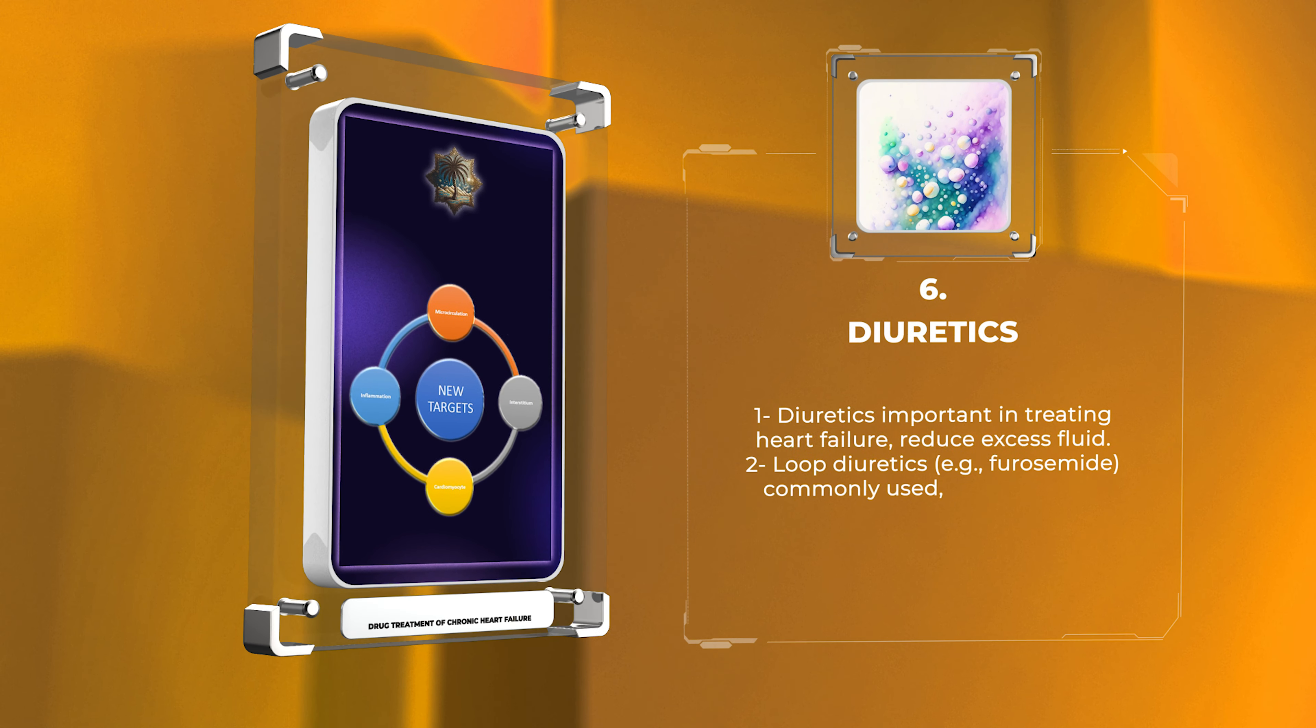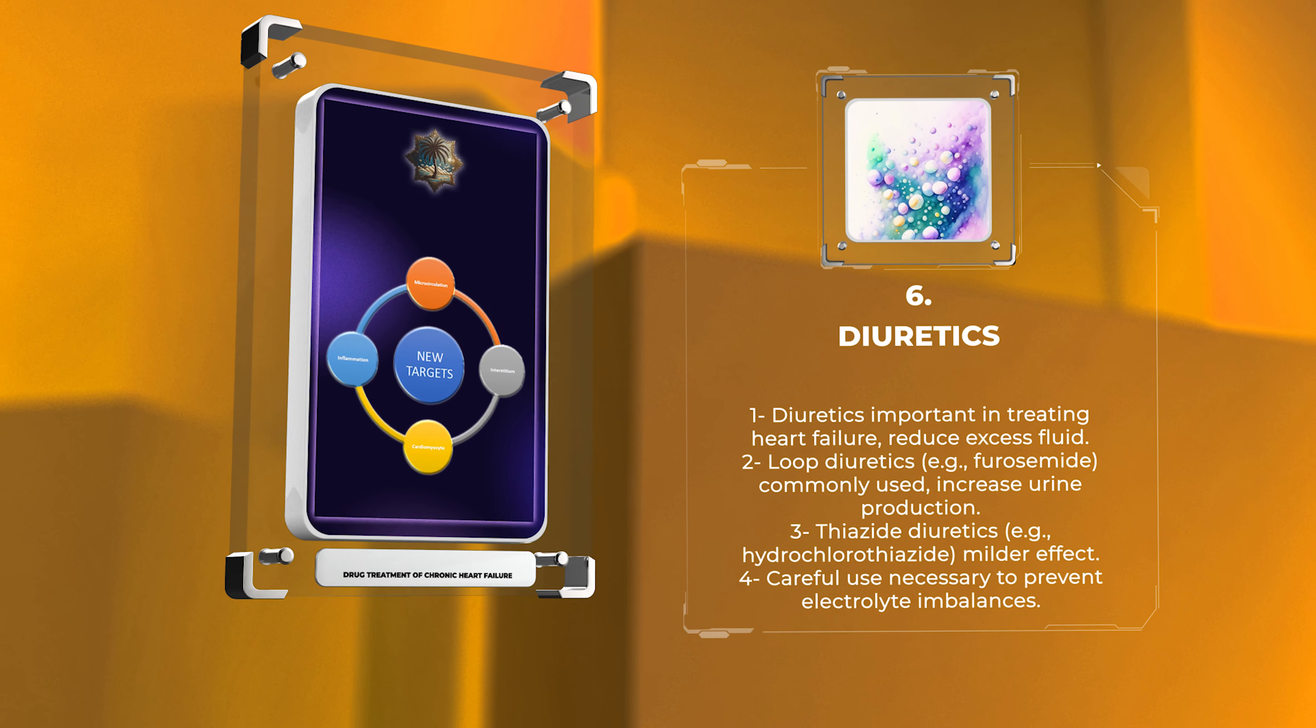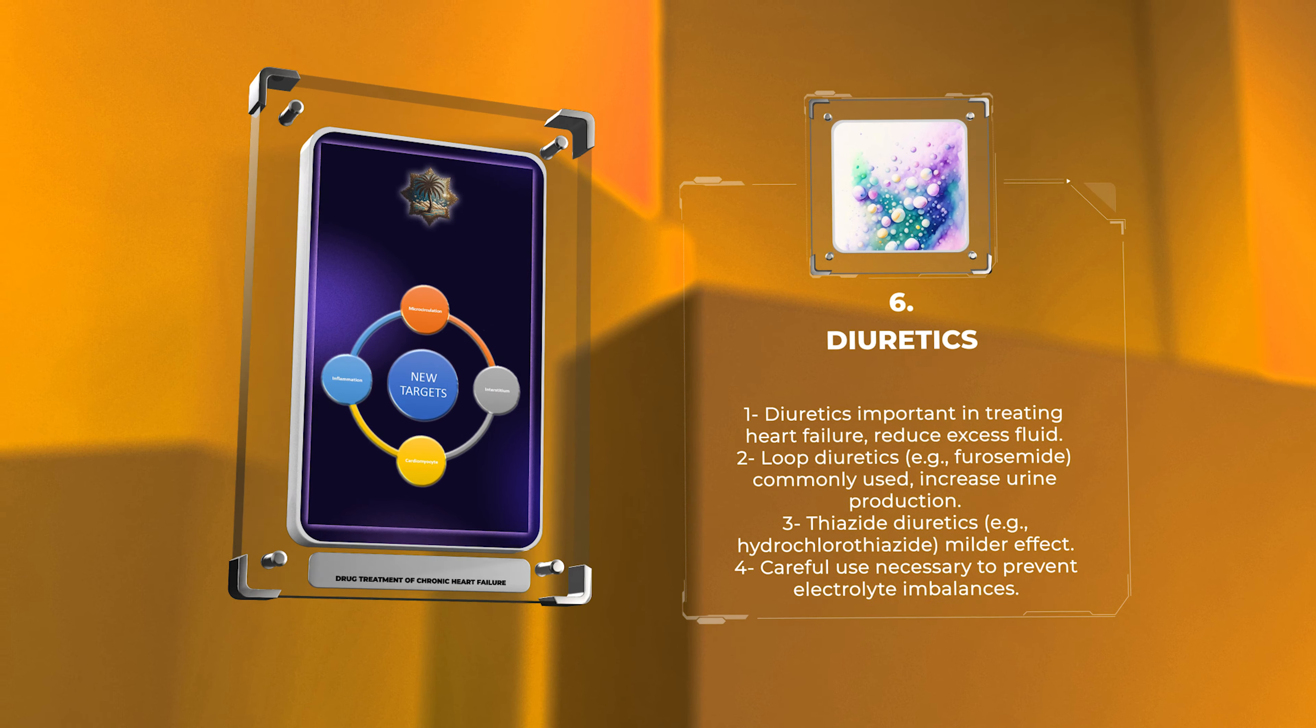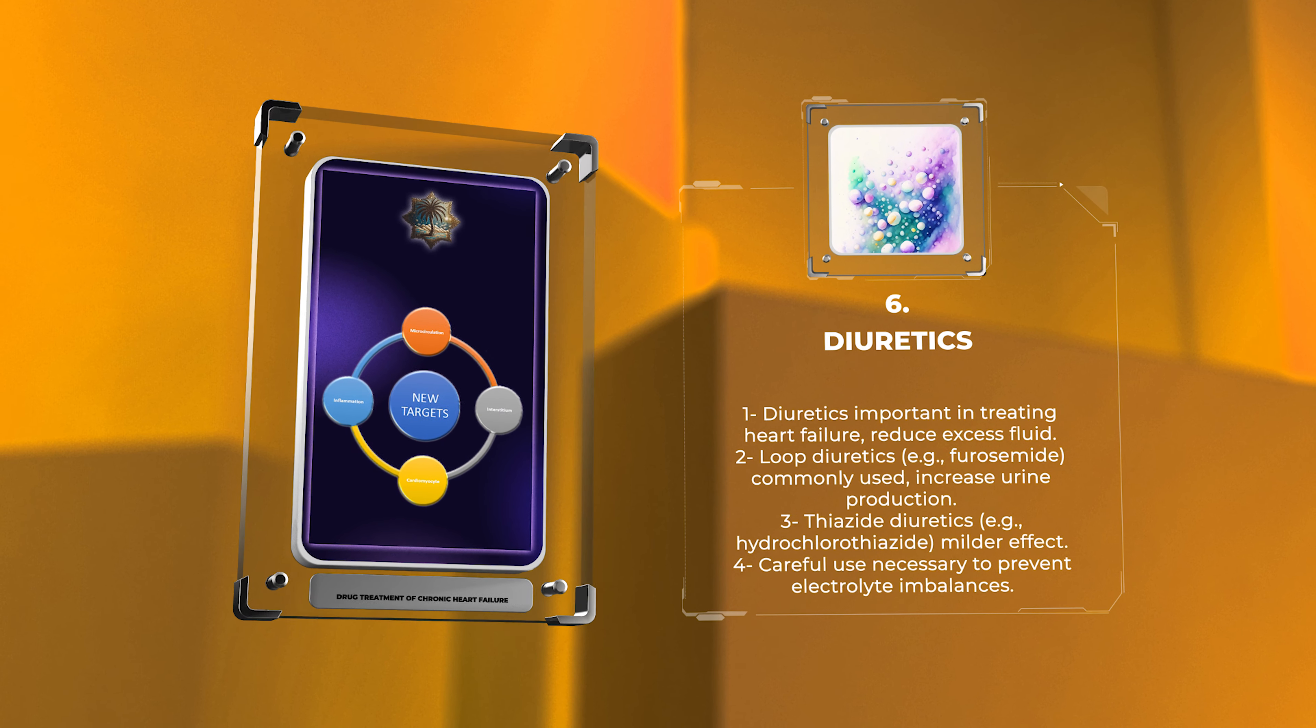Diuretics are important in treating heart failure by reducing excess fluid. Loop diuretics like furosemide are commonly used and work by increasing urine production. Thiazide diuretics like hydrochlorothiazide have a milder effect. However, careful use is necessary to prevent electrolyte imbalances.